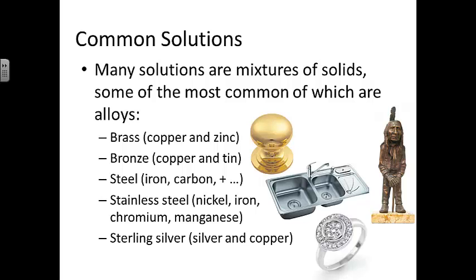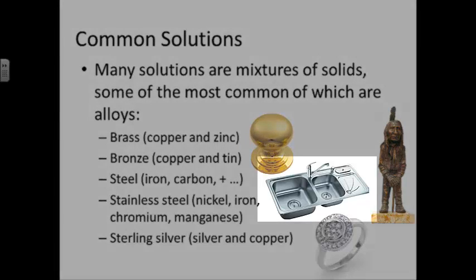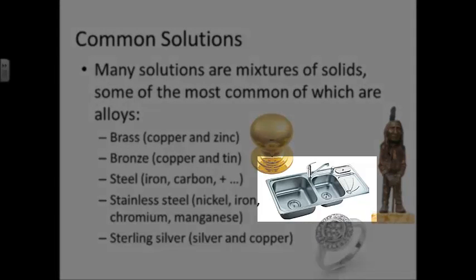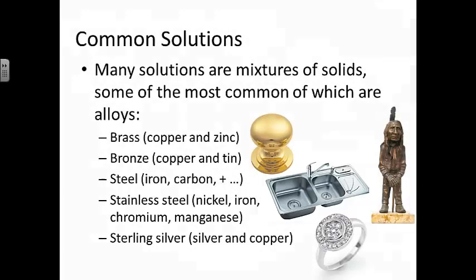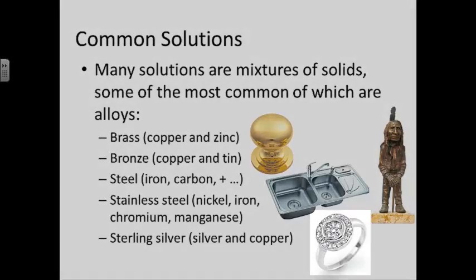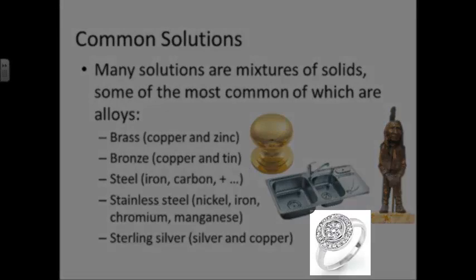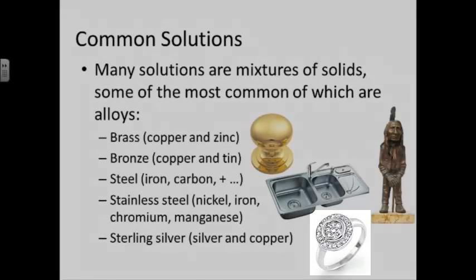There's not just one type of steel — there are over 4,000 different types of steel used in industry. Stainless steel is made by mixing together nickel, iron, chromium, and manganese, as seen in this sink. Sterling silver is a mixture of silver and copper.